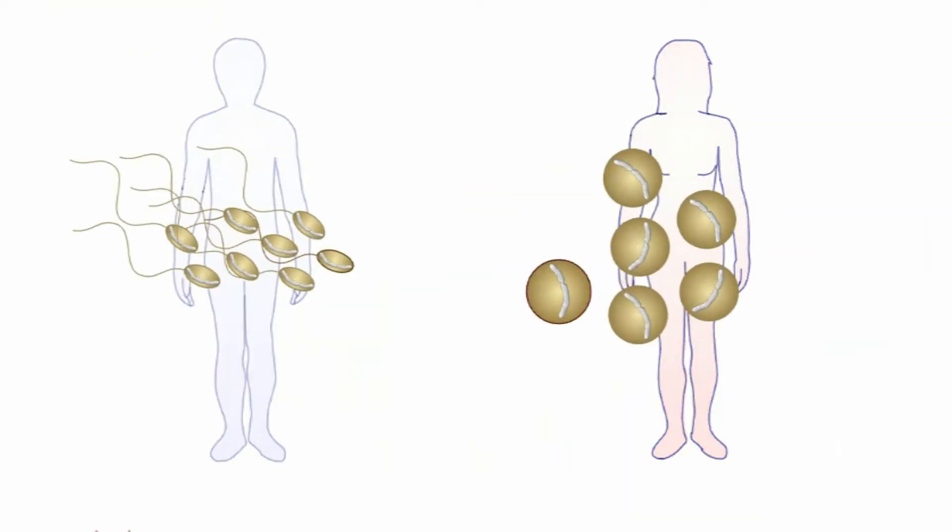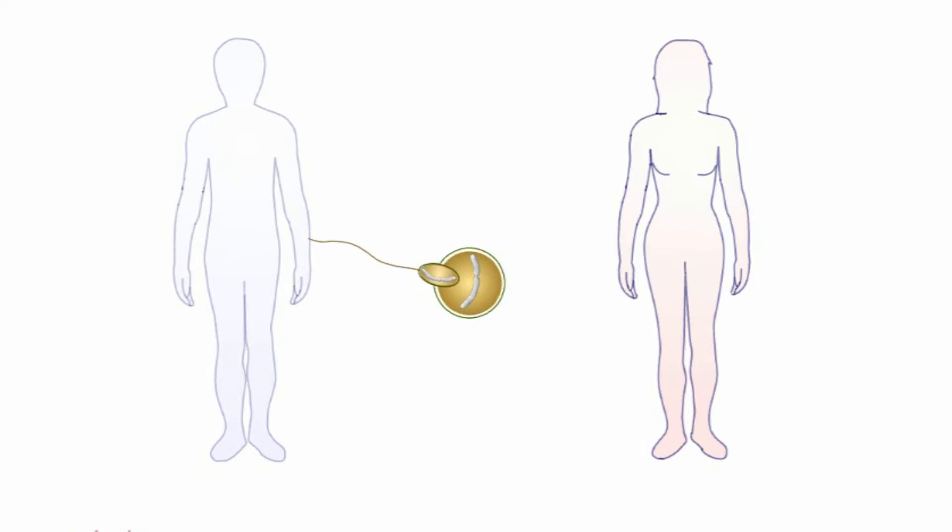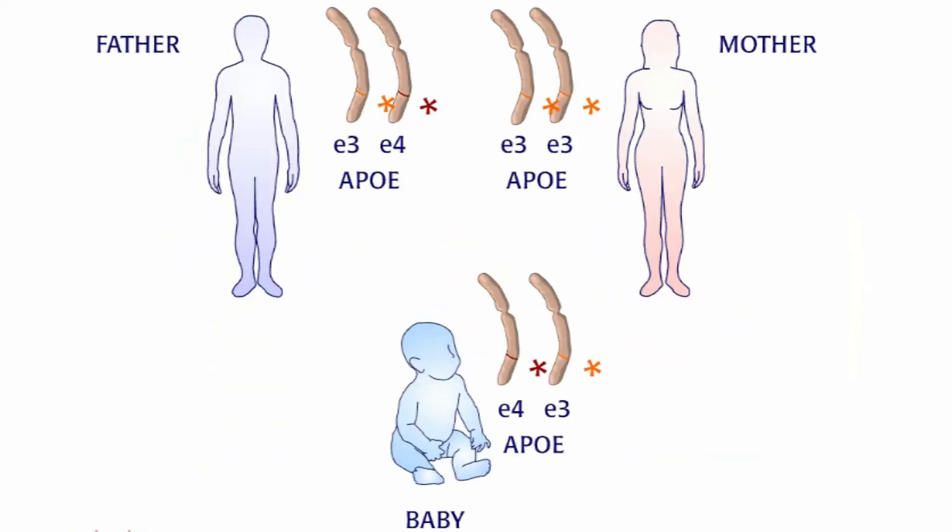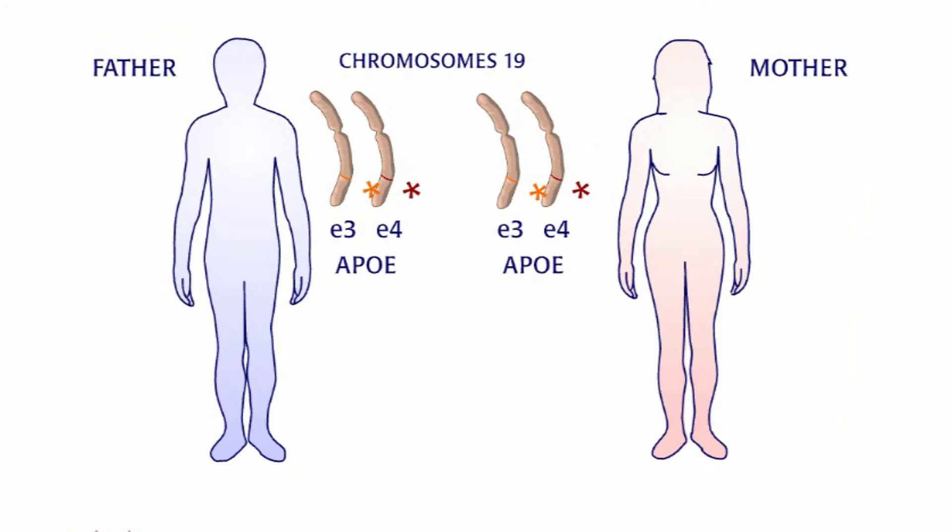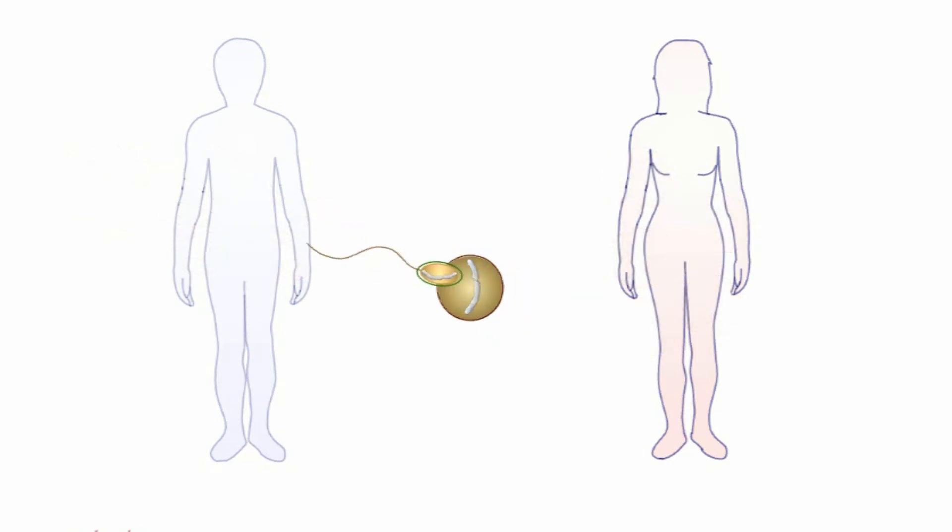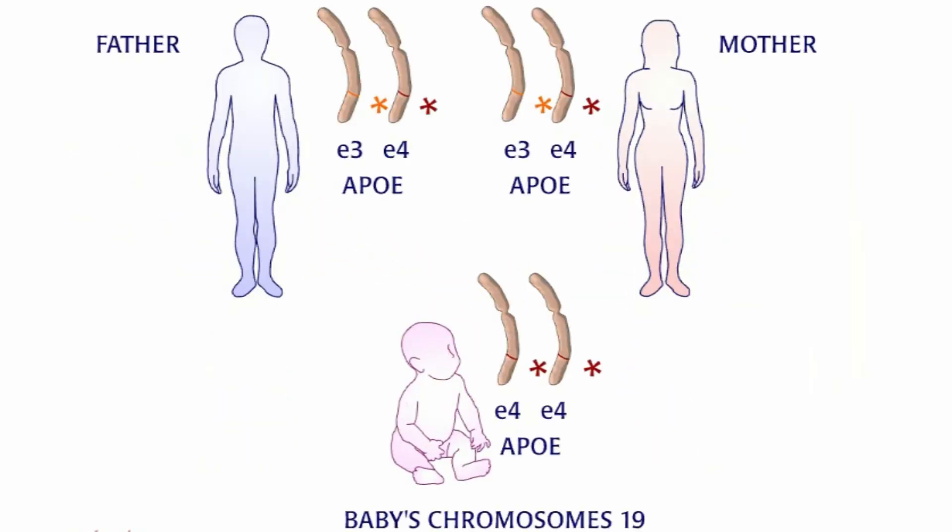Each parent contributes one allele of the APOE gene to his or her offspring. People who inherit two copies of the E4 allele of the APOE gene are at greater risk of developing sporadic AD than those with a single E4 allele.